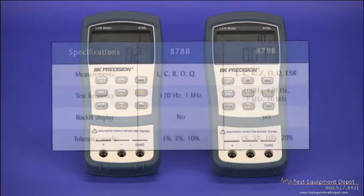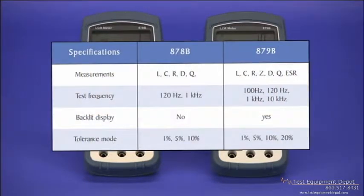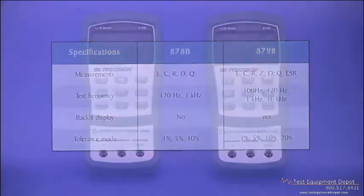The differences between the two meters can be seen here in this table. Not directly shown is that the 879B is able to measure a wider range of component values. The form factor of these meters was designed to fit comfortably in your hand.